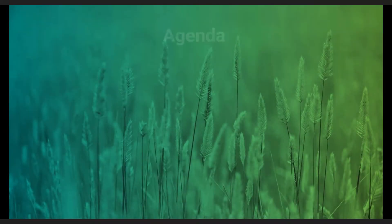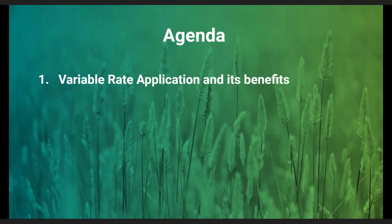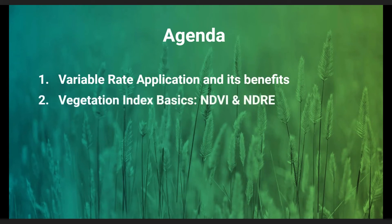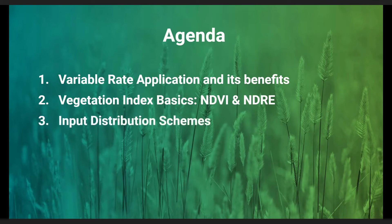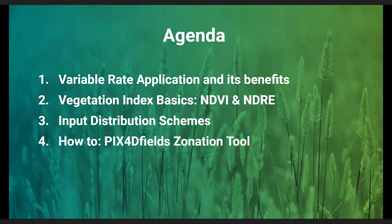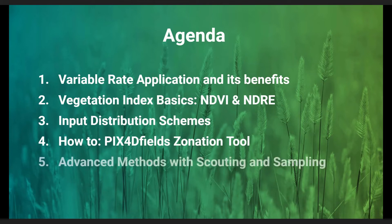This video will cover what variable rate applications and their benefits are. We have a look at two common vegetation indices for variable rate applications, how you can use them to distribute your inputs on the field, how the whole process is done with Pix4D Fields from an index to a final prescription map ready for application. In the end, we have a brief look at an advanced method to get the most out of your maps.